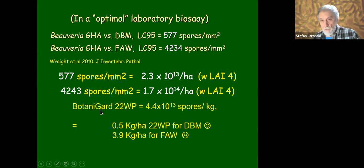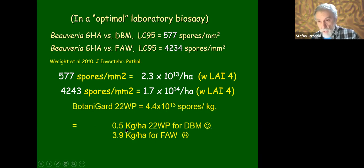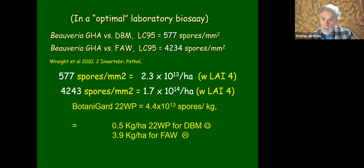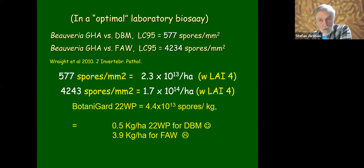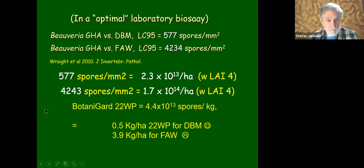In terms of per hectare: 577 spores per millimeter squared is the equivalent of 2.3×10¹³ spores per hectare in a crop with a leaf area index of four — potatoes, tomatoes, cucumbers. For fall armyworm with an LC 95 of 4,200, that translates to 1.7×10¹⁴ spores per hectare. The commercial formulation I helped develop — Tanagard 22 wettable powder — has 4.4×10¹³ spores per kilogram. For diamondback moth the farmer only needs half a kilogram per hectare; for fall armyworm he needs almost four kilograms per hectare, which is cost prohibitive.